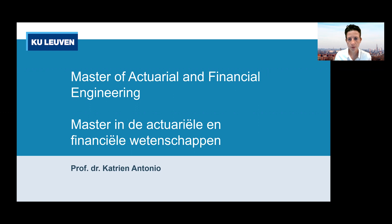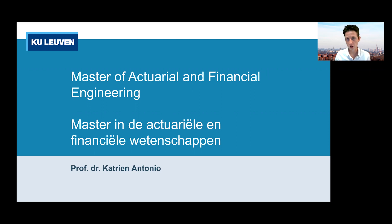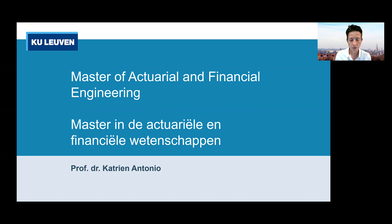Looking at our master's program in Actuarial and Financial Engineering, you'll notice that we offer this program in two languages. We've got a fully English master's program of 120 credits, but we also have a Dutch equivalent. The two programs are exactly the same when it comes to the compulsory courses. In the Dutch program, you will go for electives told in Dutch, and you will also write your master's thesis in Dutch.